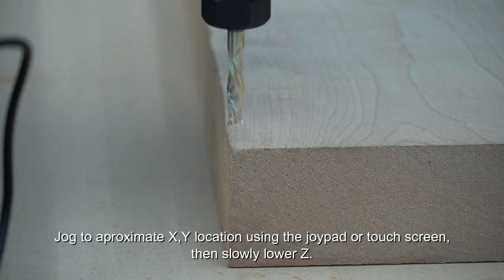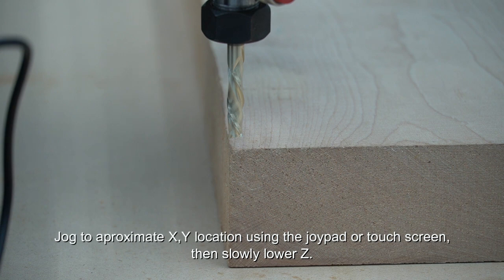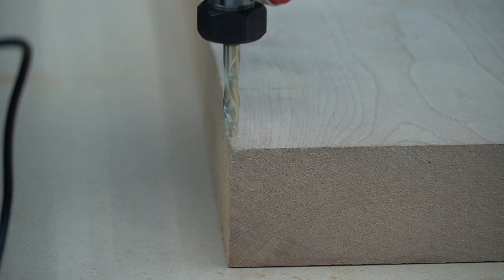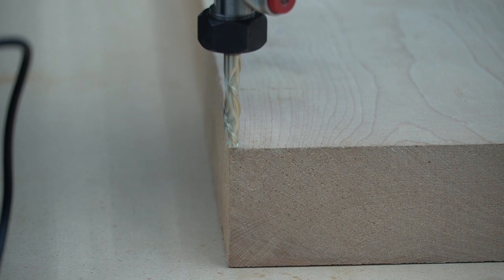With the approximate X, Y location and the Z about a half inch above your material, you can press the A or X buttons to slow down your speeds on your joypad and make fine adjustments.